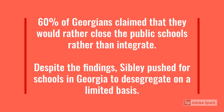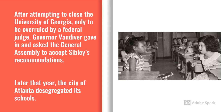After the discussions were conducted, 60% of Georgians claimed that they would rather close the public schools than integrate. Despite the findings, Sibley pushed for schools in Georgia to desegregate on a limited basis. Based on the commission's findings, the legislature was set to vote on the matter in January of 1961, but the integration of the University of Georgia shifted the governor's and the legislature's focus. After attempting to close the University of Georgia, only to be overruled by a federal judge, Governor Vandiver gave in and asked the General Assembly to accept Sibley's recommendations. Later that year, the city of Atlanta desegregated its schools.